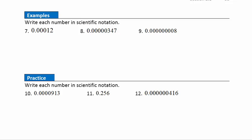Example 7: writing a small number in scientific notation. Scientific notation requires one digit in front of the decimal — that's 1.2. We need to multiply by 10 to some power, and since we want a smaller number, we use a negative exponent. Starting at 1.2, we move the decimal four places to the left to match our target number, so we write 1.2 times 10 to the negative fourth.